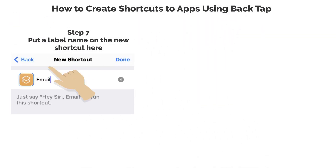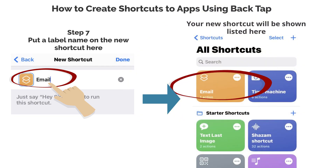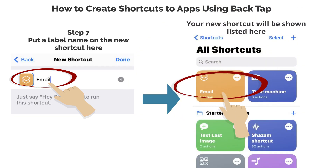Step 7. Put a label name on the new shortcut here. Your new shortcut will be shown listed here.